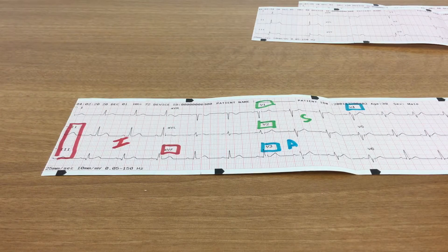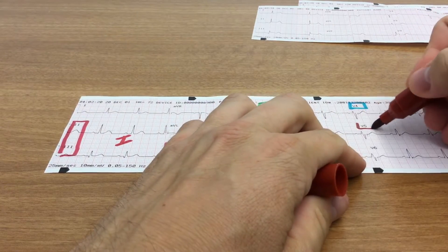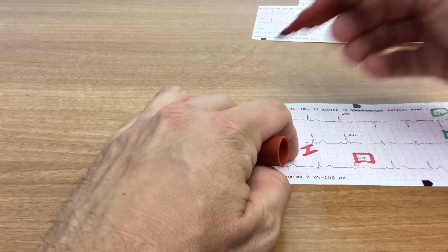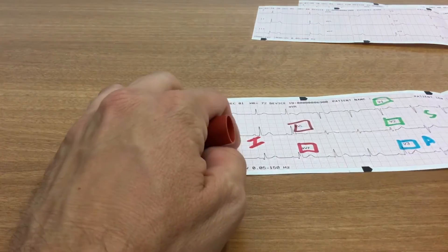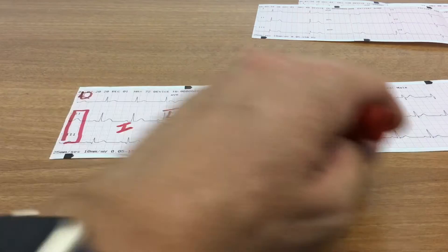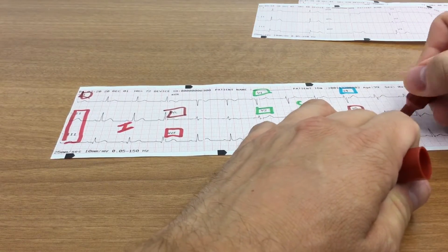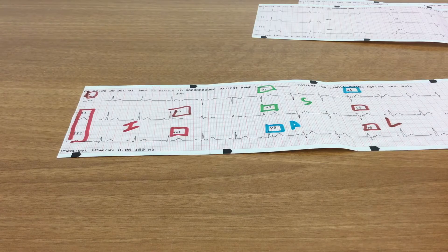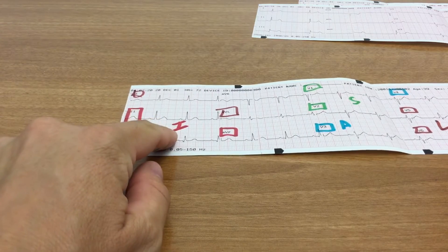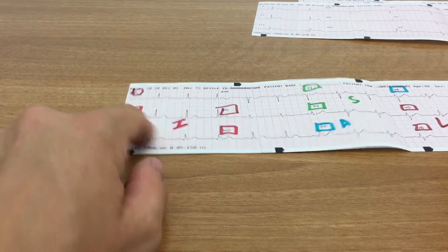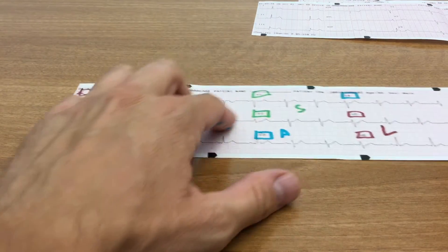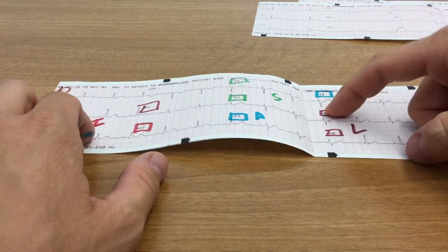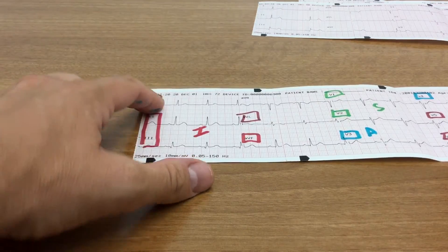And then that just leaves our leftovers with one exception, and the leftovers, V5, V6, 1, and augmented vector left, AVL. So V5, V6, 1, and AVL are the lateral wall, the lateral wall. So I, inferior wall, 2, 3, AVF. S, septal wall, V1 and V2. A, anterior, V3 and V4. L, lateral, V5, V6, 1, AVL.